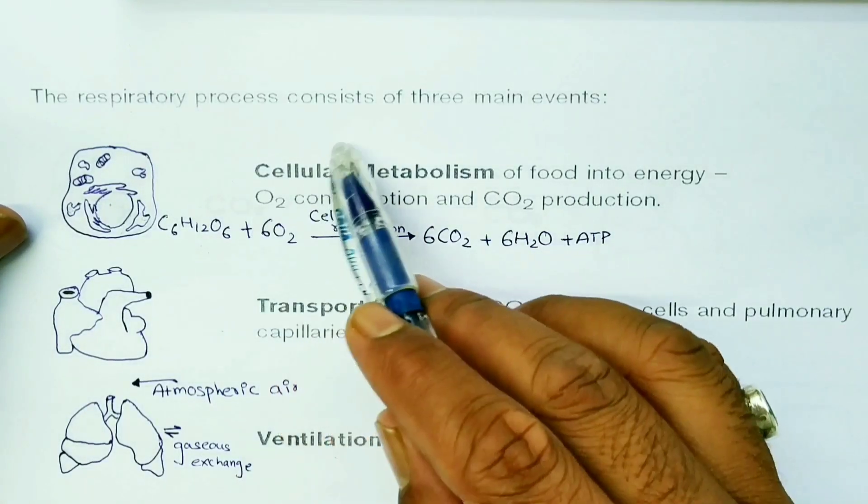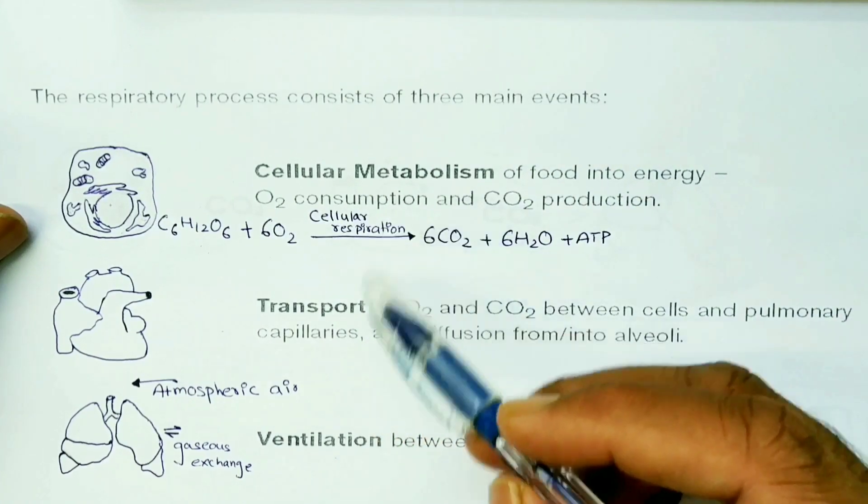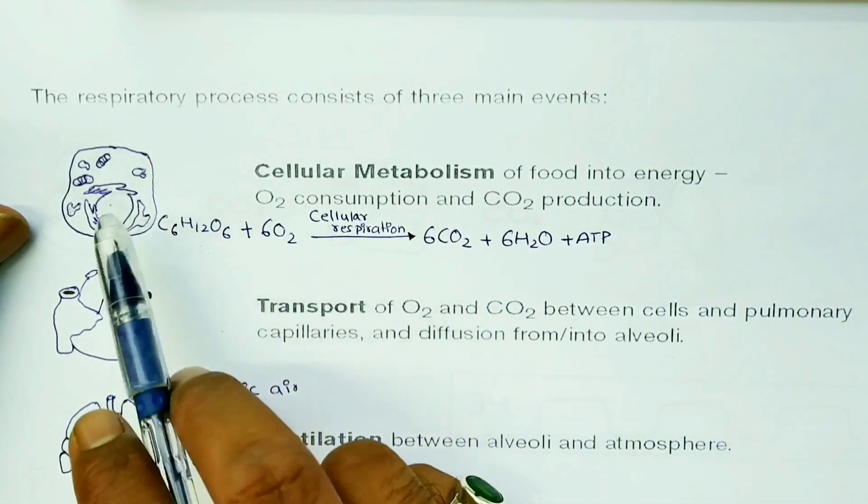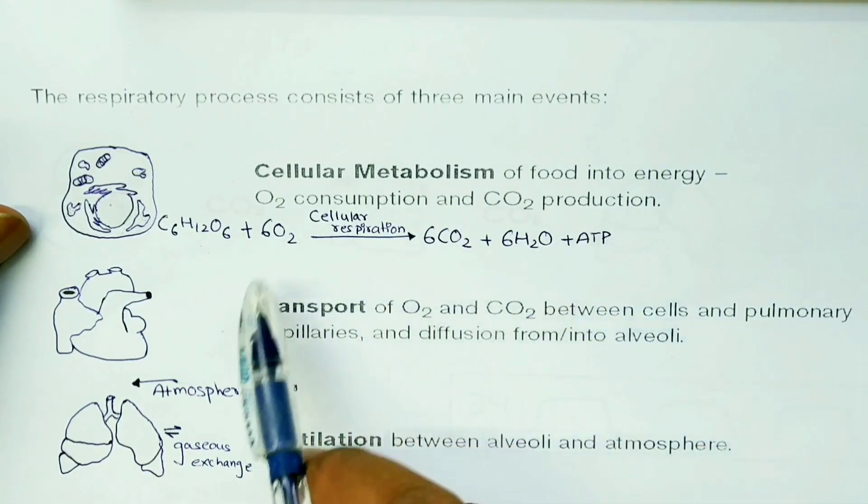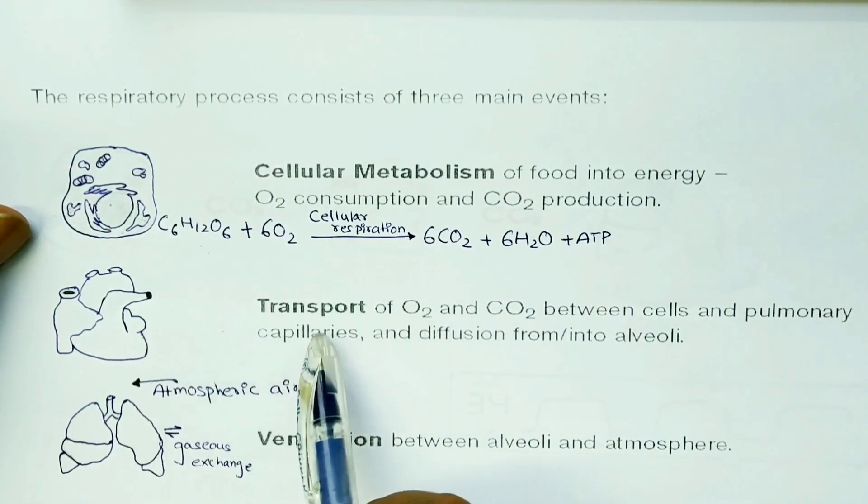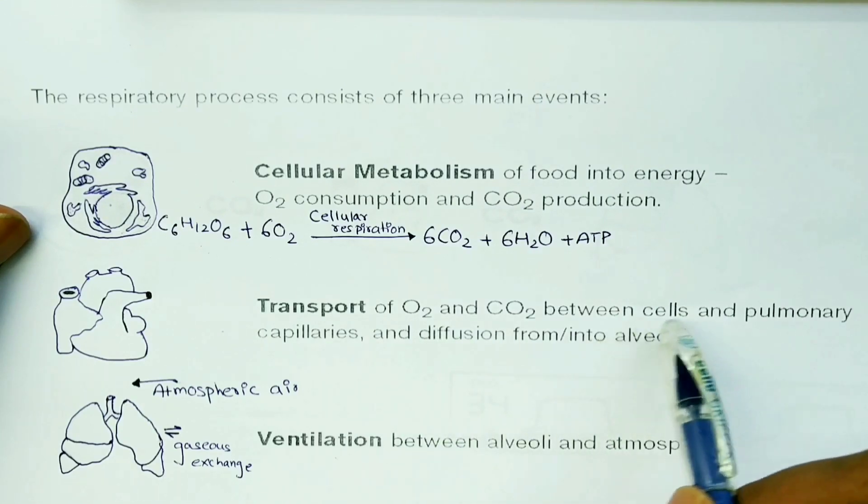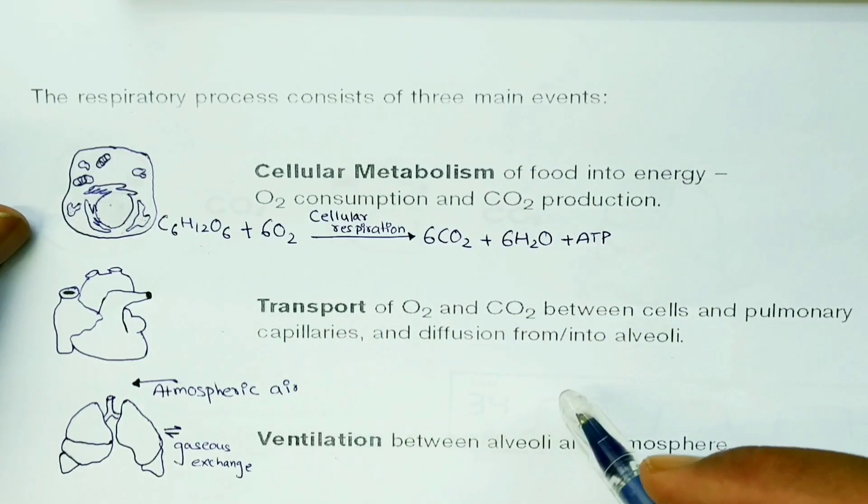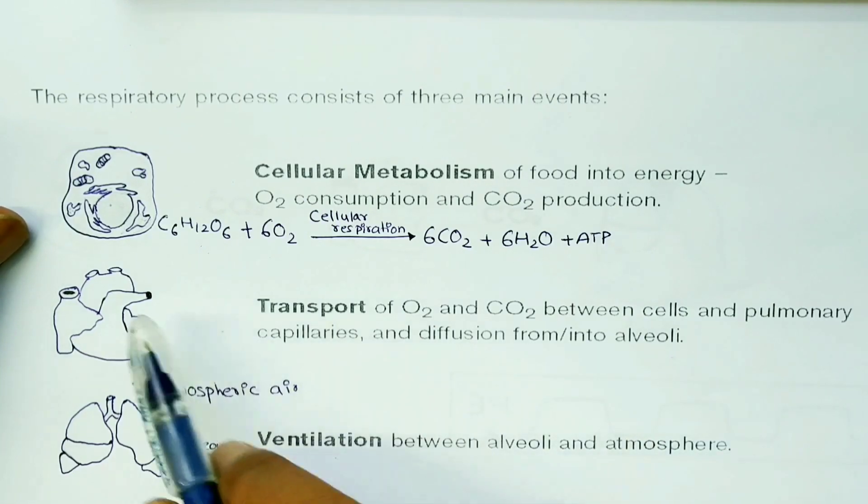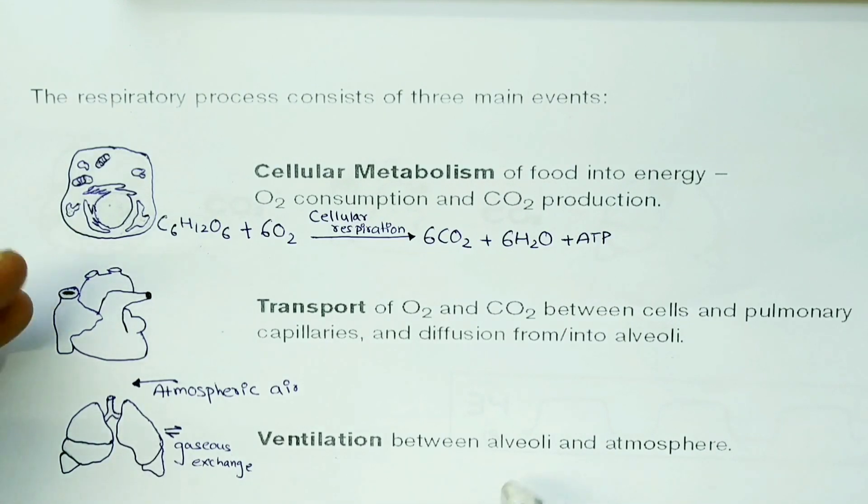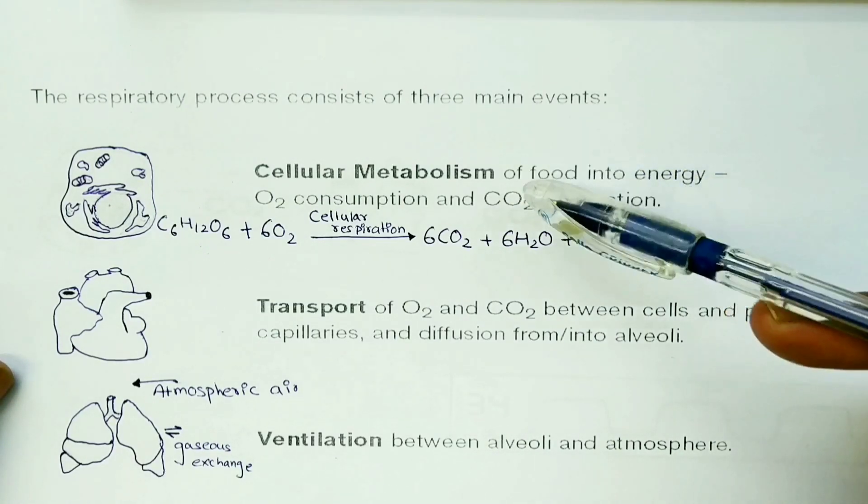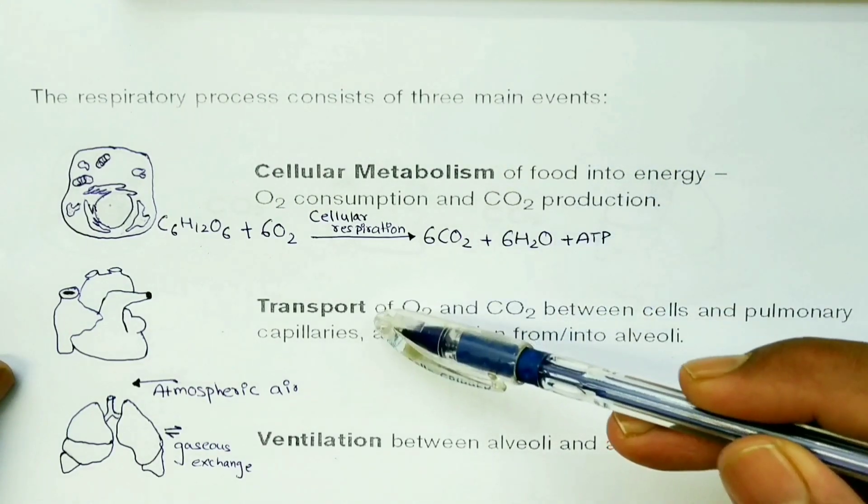The respiratory process consists of three main events: cellular metabolism, transport, and ventilation. Cellular metabolism of food into energy, O2 consumption and CO2 production. Then we have the transportation of O2 and CO2 between cells and pulmonary capillaries and diffusion into alveoli. Then ventilation between alveoli and atmosphere. The ET CO2 can give us the idea about cellular metabolism, transport, and ventilation.